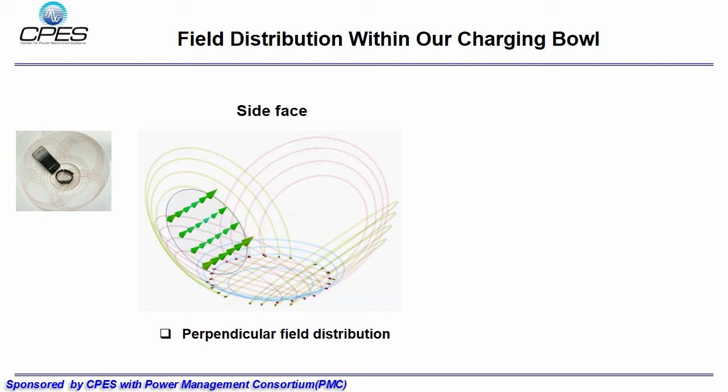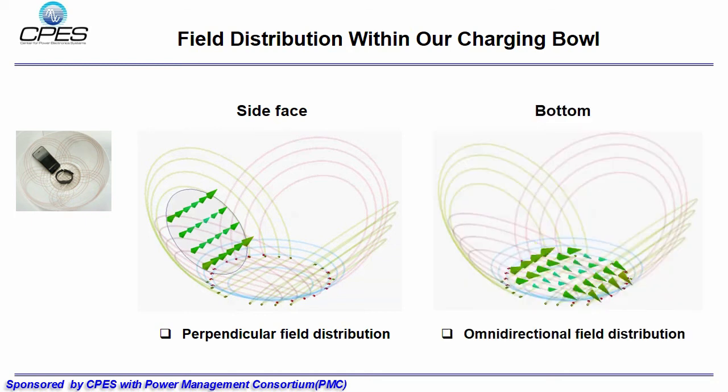To visualize the field distribution, FEA simulation result is shown in this page. At first, field is perpendicular to surface inside phase, which is good for charging planar devices. Then, for field distribution in the bottom, the magnetic field will rotate in different direction and cover all the direction in 3D space.